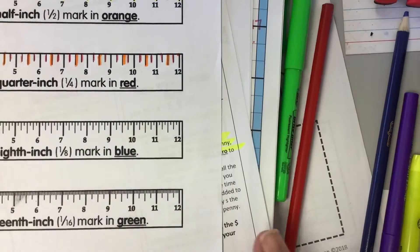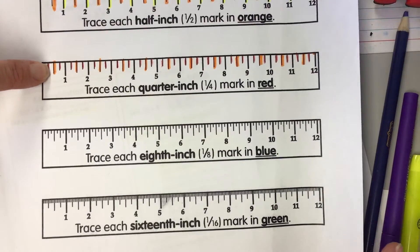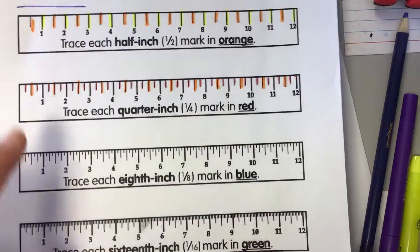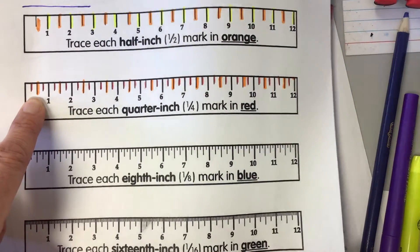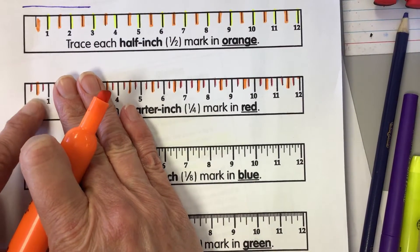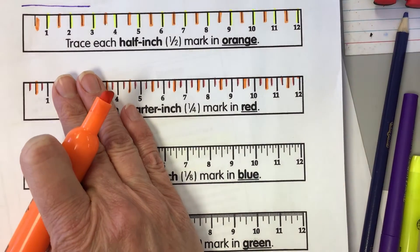Okay, the reason I want to point out these longer lines is because every time you have a longer line, it's really an equivalent fraction. Because this is one-fourth and this is one-half. What is the equivalent fraction there to one-half? What else could we call that fraction besides one-half, Macy? Two-fourths.